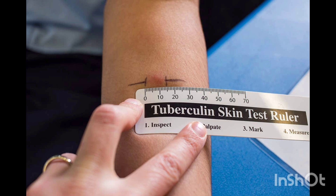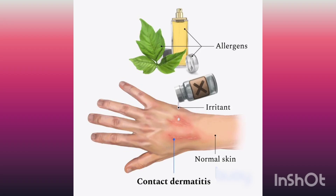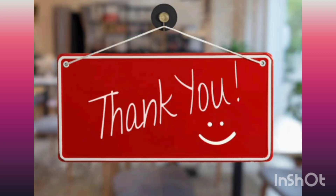Another example of type 4 hypersensitivity is contact dermatitis, in response to antigens such as metals, dyes, drugs, cosmetics, or oil-based chemicals when applied to the skin, causing inflammation. That's it for today — I hope you liked the lecture. Best of luck for your exam, thank you.